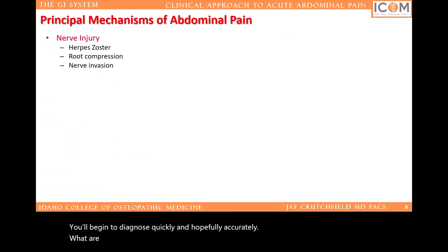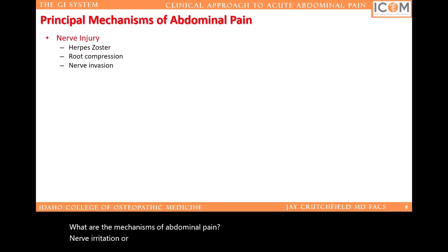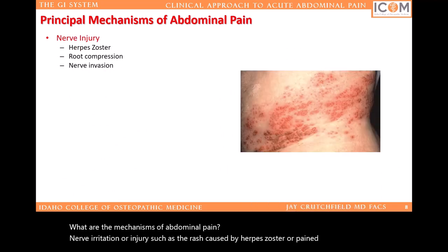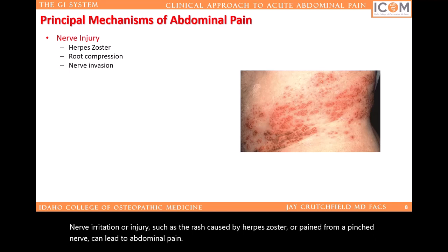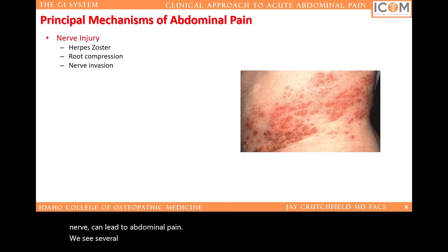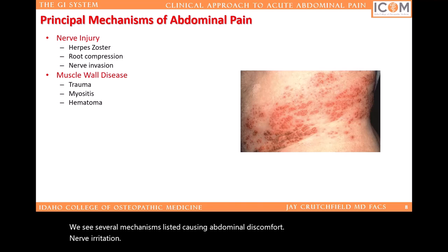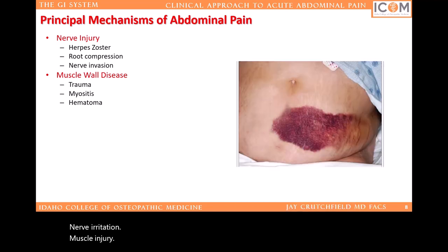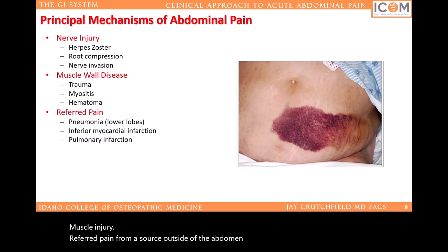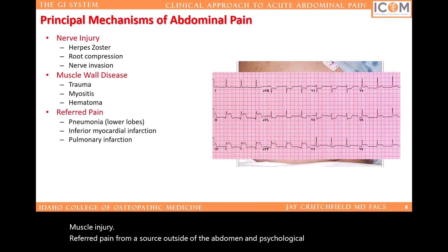What are the mechanisms of abdominal pain? Nerve irritation or injury — such as the rash caused by herpes zoster or pain from a pinched nerve — can lead to abdominal pain. We see several mechanisms listed causing abdominal discomfort: nerve irritation, muscle injury, referred pain from a source outside of the abdomen, and psychological distress can all cause abdominal pain.